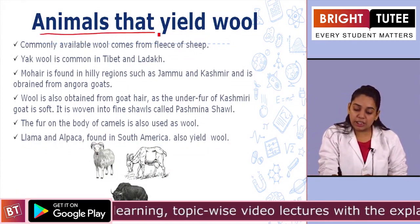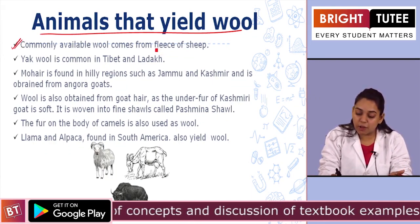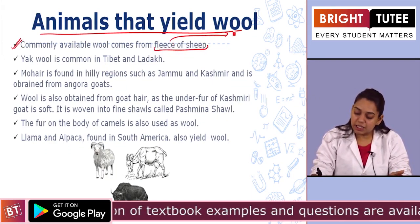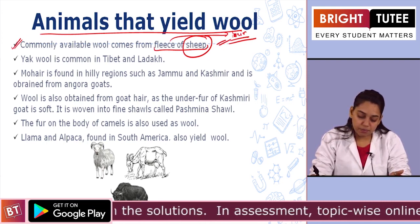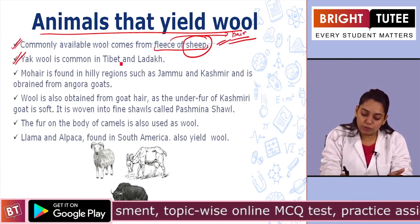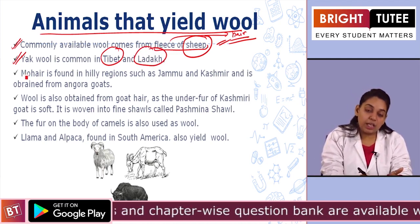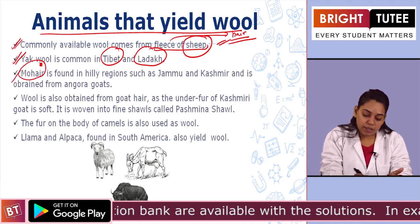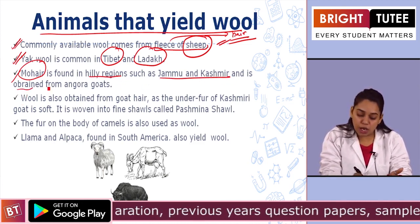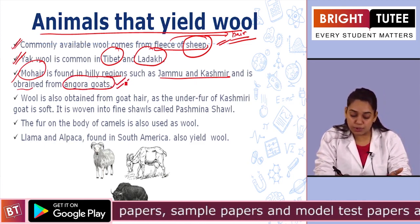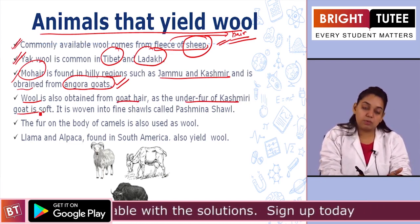Now let us study the animals that yield wool. Commonly available wool comes from the fleece of sheep. Yak wool comes from Tibet and Ladakh because yaks are mostly found there. Then we have another type of wool known as mohair, found in hilly regions such as Jammu and Kashmir, obtained from Angora goats — a special species of goat. Wool is also obtained from the goat hair, as the under-fur of Kashmiri goat is very soft.